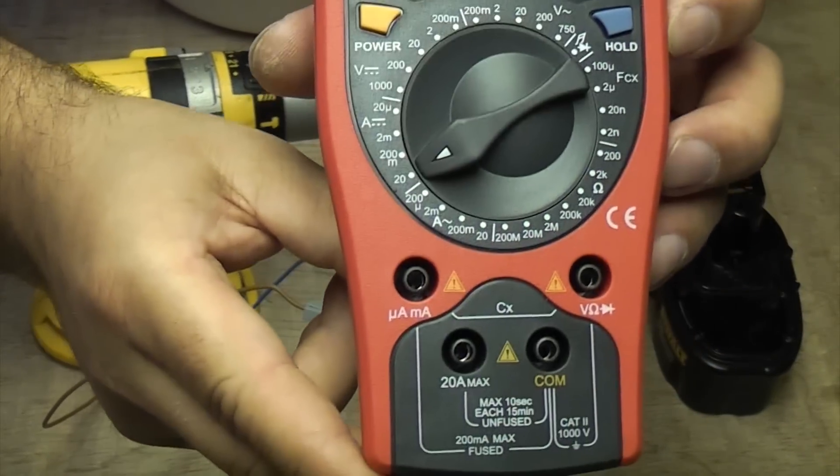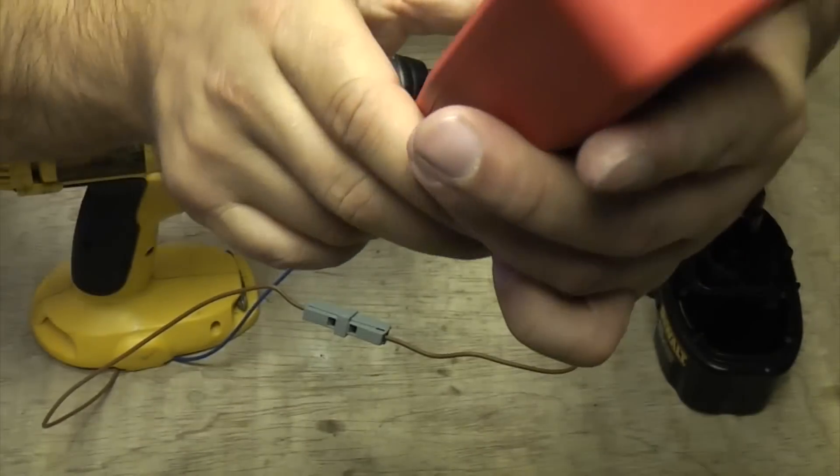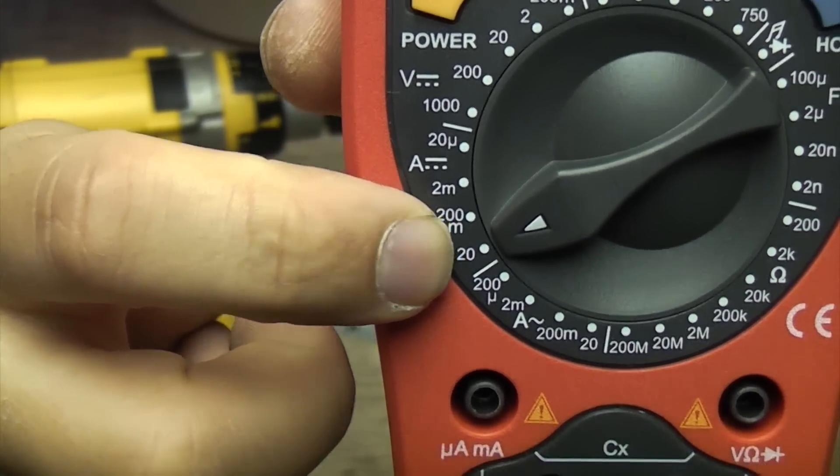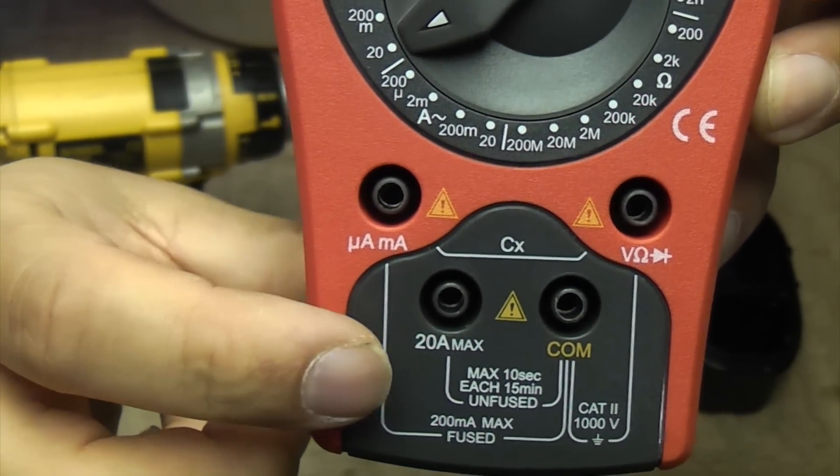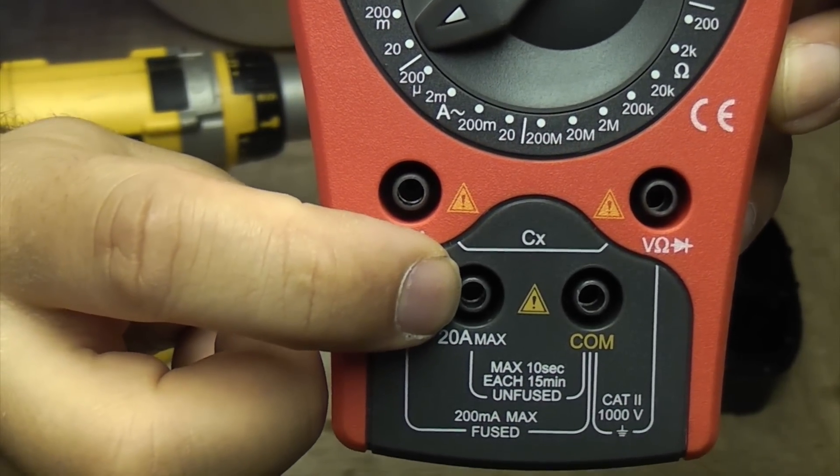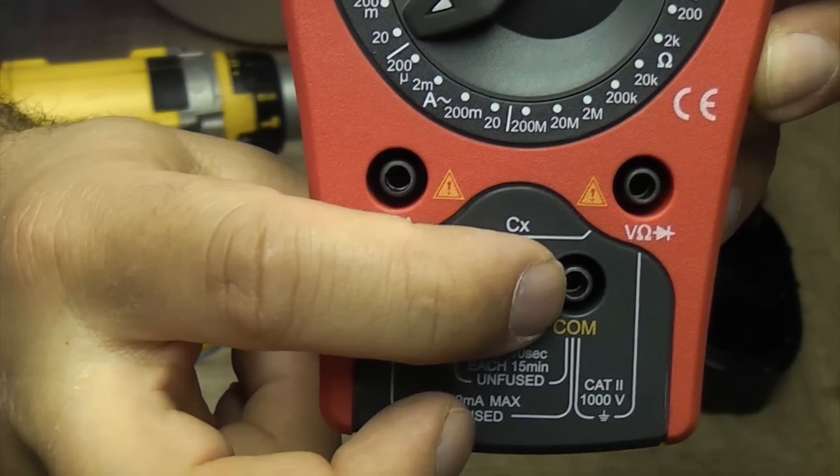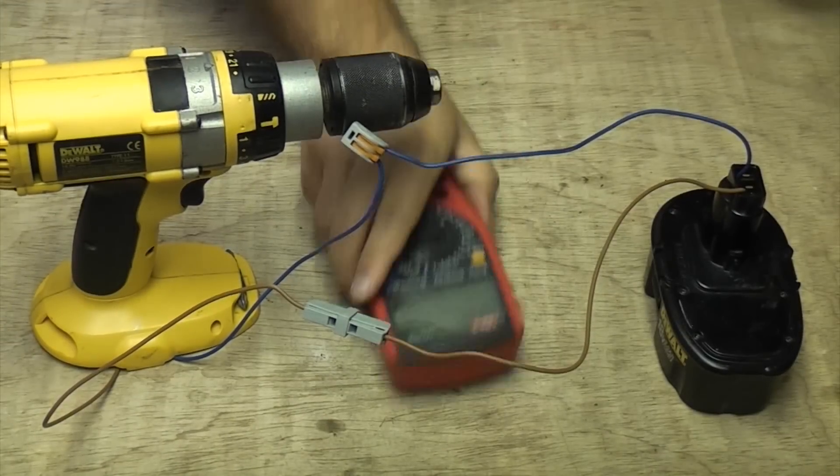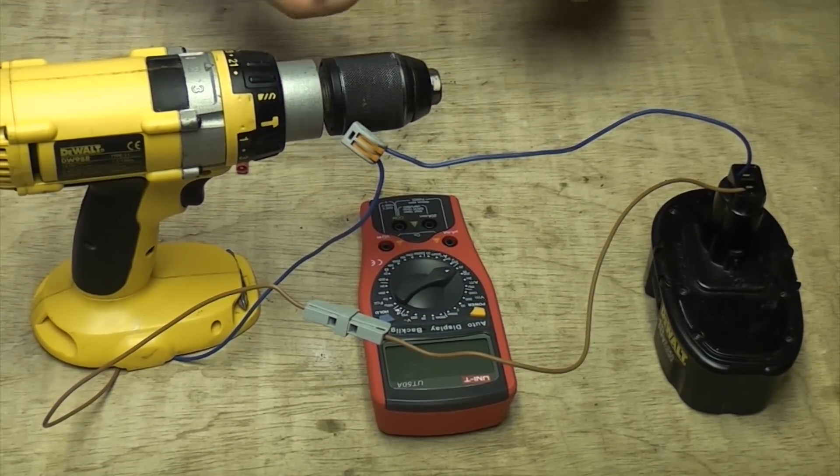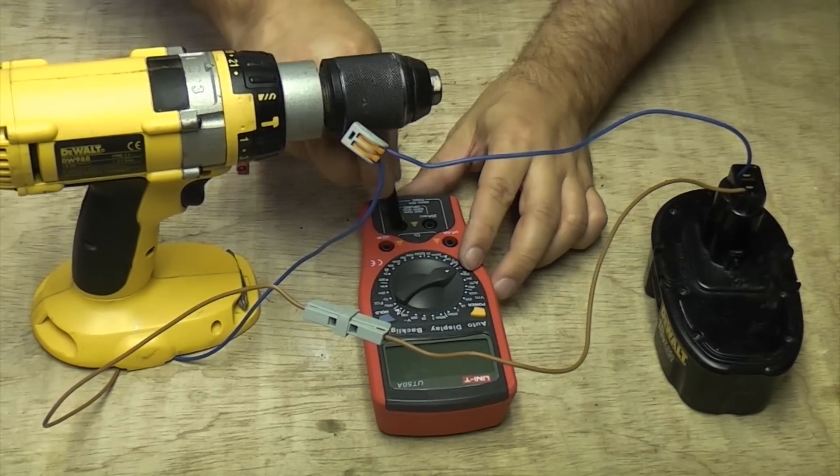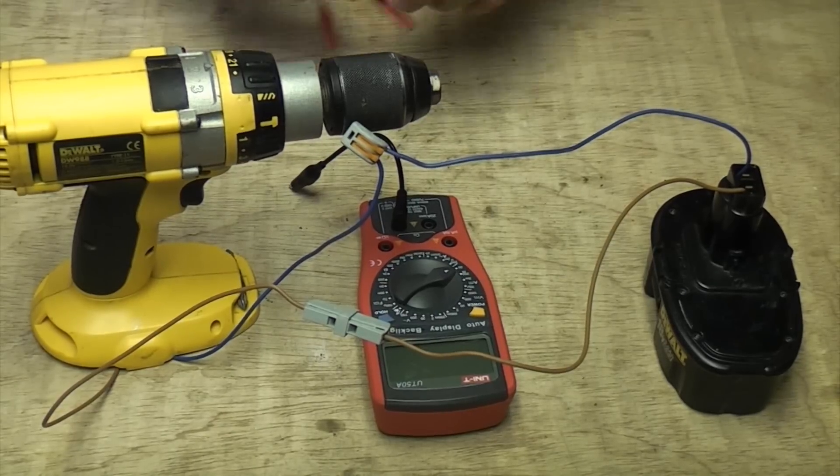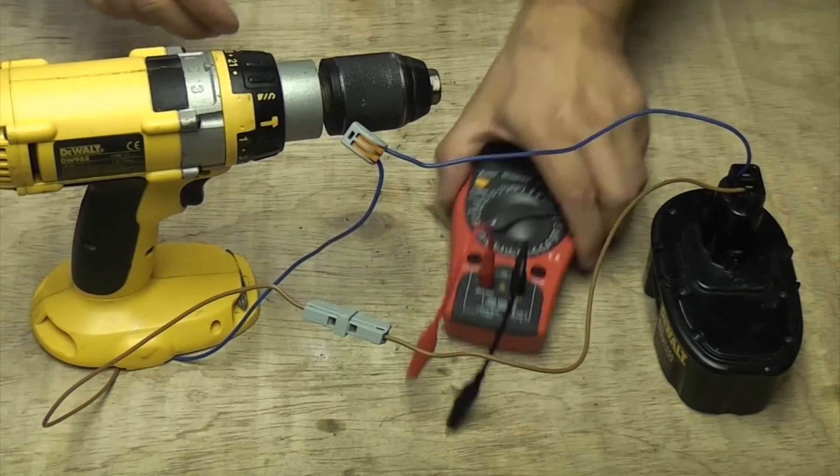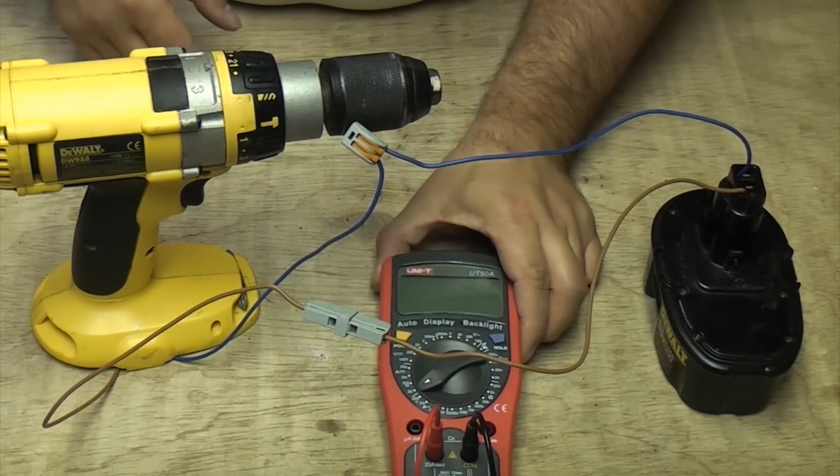So this is the multimeter that I'm going to be using, and if you look at it there I've already switched it to the 20 amp mark. And also when you're measuring amps we need to put one lead in the 20 amp terminal and one lead in the comm terminal. So I'll just do that now. And I'll turn it that way then you can see it.